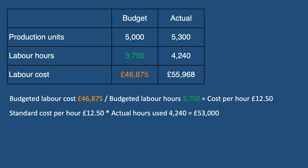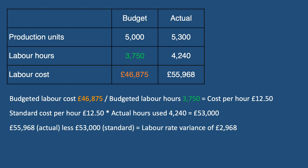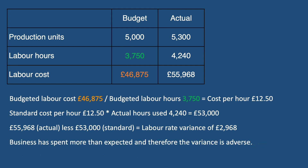We now compare this figure to the actual cost of those labour hours to give us our rate variance. That is £55,968 less £53,000, giving us a labour rate variance of £2,968. As the business has spent more than expected, this variance is adverse.